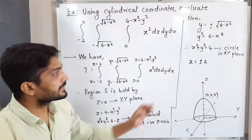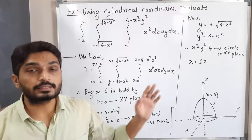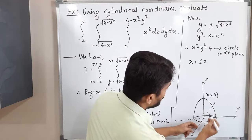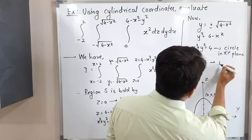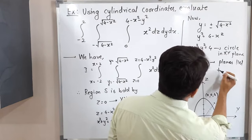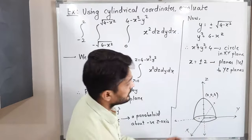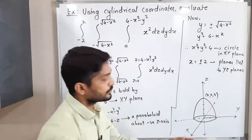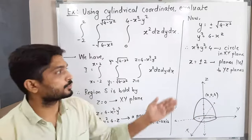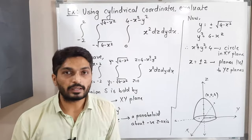For the x-limits, x = ±2. These are planes parallel to the yz-plane passing through x = 2 and x = -2. The circle is bounded by x = 2 and x = -2, which is consistent with the circle of radius 2.